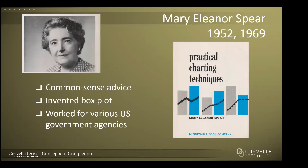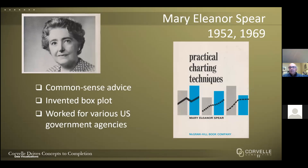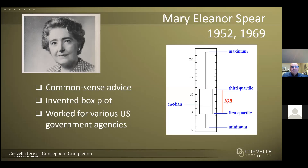Mary Eleanor Spear wrote Charting Statistics and Practical Charting Techniques. Her books are filled with common sense charting advice. She was the first to view chart development as a team effort, applied cross-hatching patterns to distinguish variables, and invented the box plot — a standardized way of displaying a data distribution based on a five-number summary: minimum, first quartile, median, third quartile, and maximum. She was a charting pioneer who worked in various U.S. government agencies as a graphic consultant.